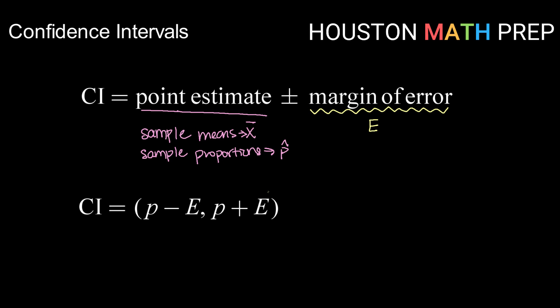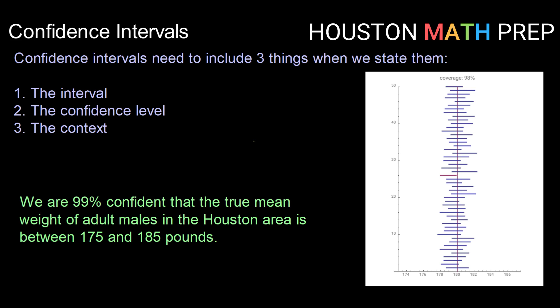Once we've calculated our interval, we want to be able to report it. When we report a confidence interval, it needs to include three things. It needs to include the interval itself, the confidence level, and the context of the problem that we're working with. The interval is the actual values that we've calculated. So in our example about weights of adult males, our interval was from 175 to 185 pounds. So we need to make sure we include our interval.